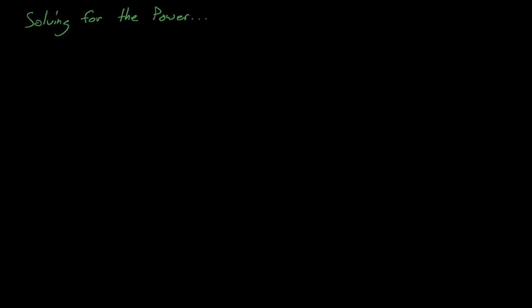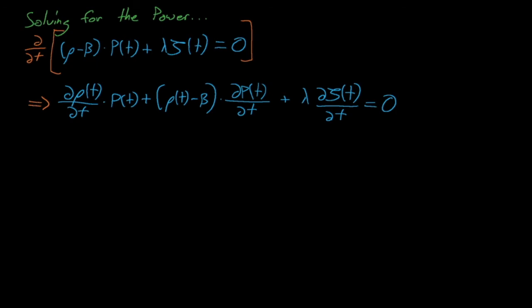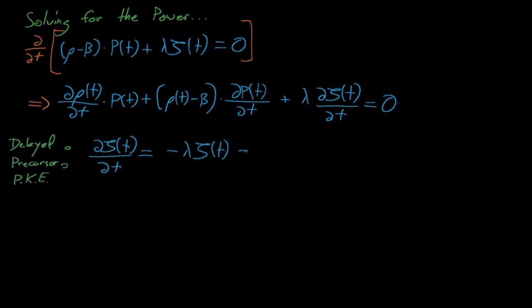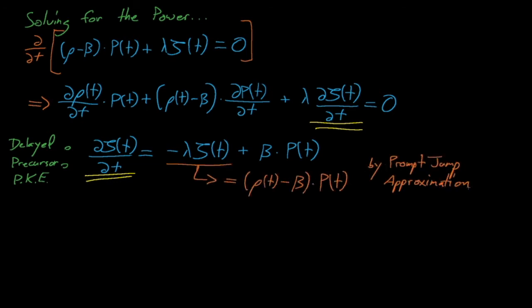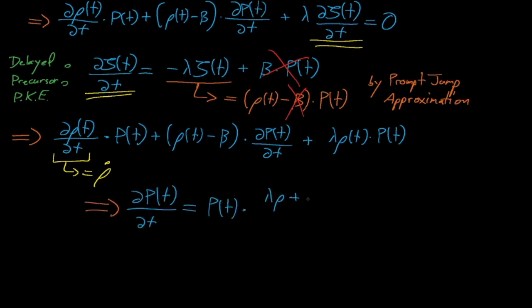With this new initial power condition in hand, we can continue solving the point kinetics equations. We take our post-prompt jump approximation neutron balance point kinetics equation and take the time derivative of both sides. Notice that we treat our reactivity as a function of time here. One benefit of the prompt jump approximation is that it allows us to solve for reactor behavior during non-constant reactivity insertion transients. After taking the time derivative of this expression, we can solve for the d-squiggle-dt term, which is also equal to the left-hand side of the precursor balance point kinetics equation. We substitute in the value of lambda squiggle from our prompt jump approximation equation, and we find that dP/dt is equal to the reactor's power times lambda*rho plus rho-dot, all divided by beta minus rho.